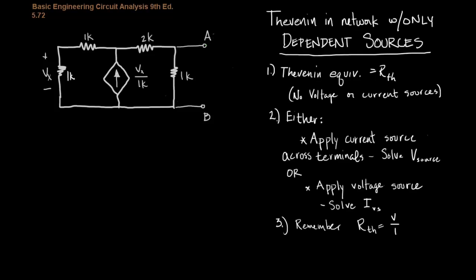So when you have that situation, you have a slightly different procedure that you follow. There is no voltage or current source in the Thevenin equivalent. There will only be a resistance. And to solve it, you can't solve these circuits that only have dependent sources the way that they are. So you either apply a current source across the terminals and then solve for the voltage or apply a voltage and solve for the current.